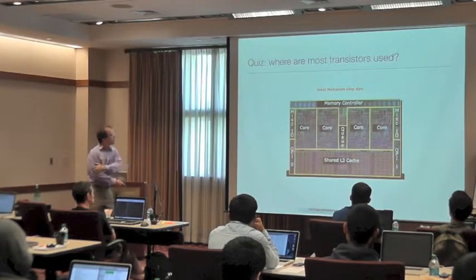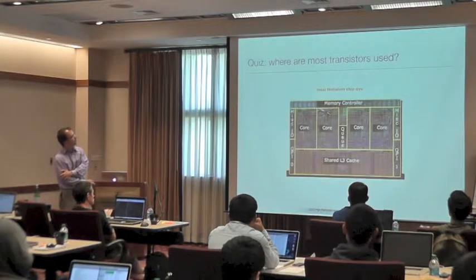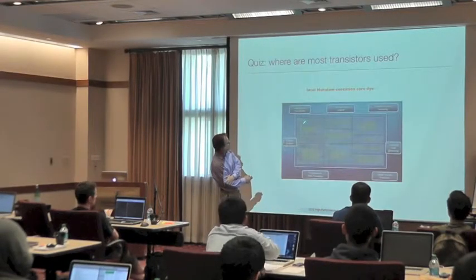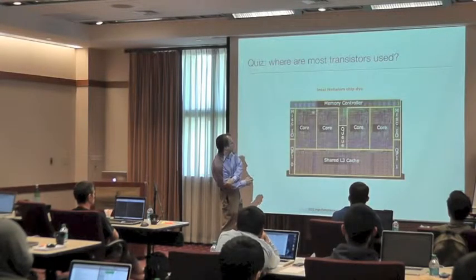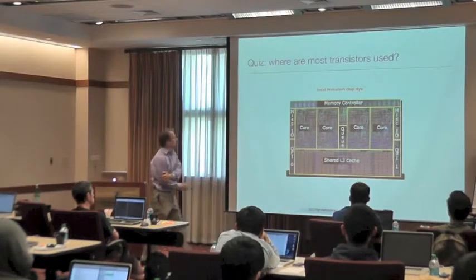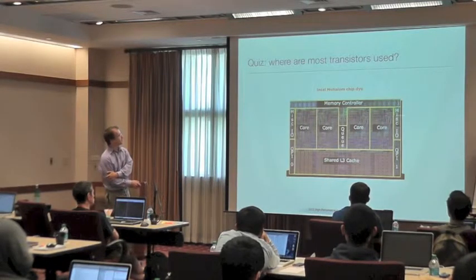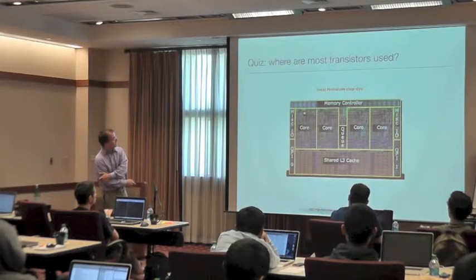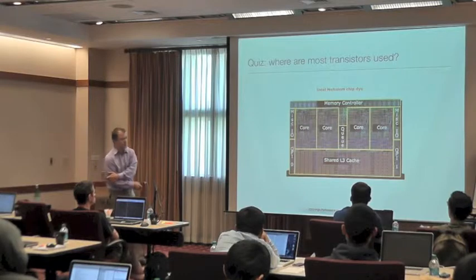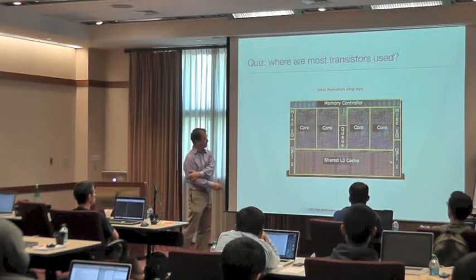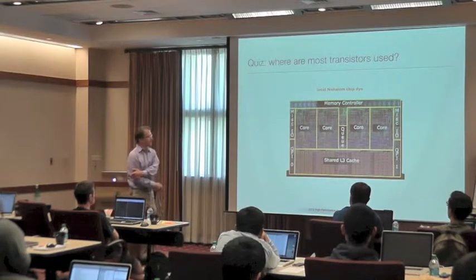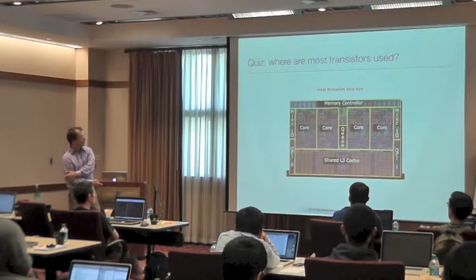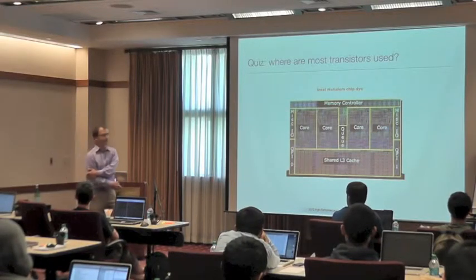This is an actual chip die. Each of these regions is a core, and you can recognize certain parts — the execution unit is in the corner. You have four cores, and then a memory controller that ensures data in the caches of different cores are in sync. You have a shared L3 cache, which is where a lot of transistors are used, and then I/O for communication to other sockets on the motherboard. So yes, most of the transistors are not in the actual execution units.